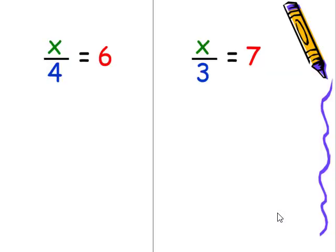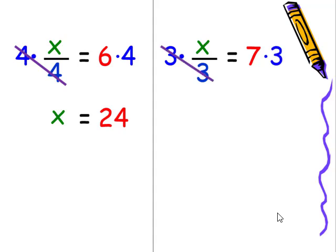Let's take a look at this example. x over 4 is equal to 6. We'll multiply both sides by the divisor, meaning the denominator of 4. The 4s will cancel, leaving us with x is equal to 24. We'll use the same process for the next one. We'll multiply by the denominator of 3, which is our divisor. The 3s will cancel, leaving us with x is equal to 21.